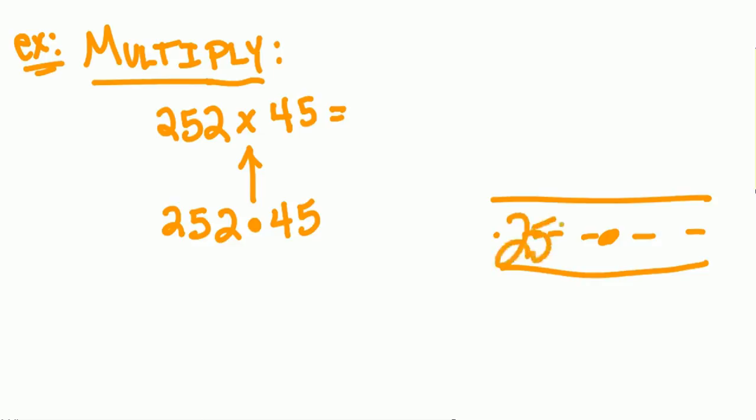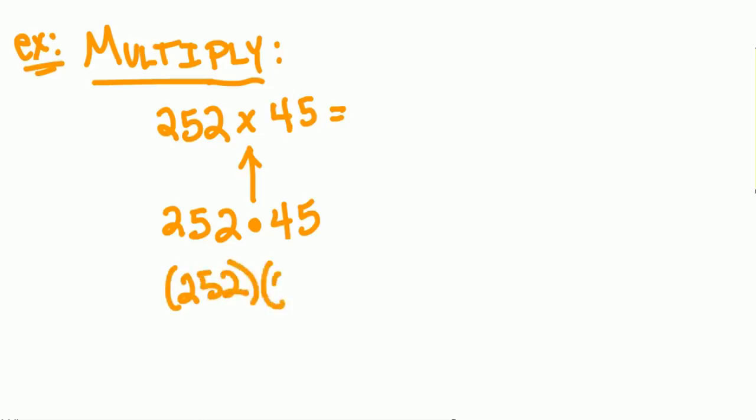So 252 times 45. So that's just to kind of give you an idea. In parentheses, 252, and another set of parentheses for the 45. These all are asking you to multiply these two numbers.